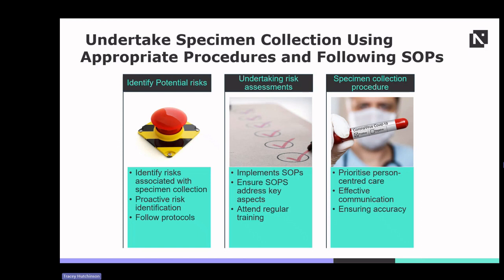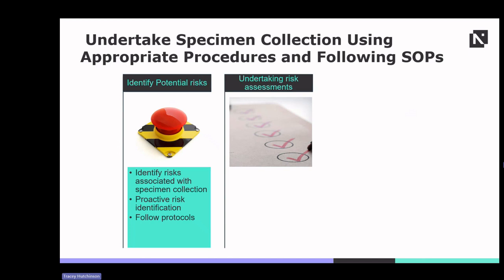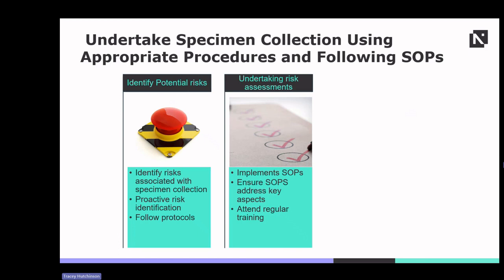When integrating risk assessment measures, first identify potential risks associated with specimen collections such as contamination, needle stick injuries and patient discomfort. Proactive risk identification through thorough assessment of the specimen collection process, equipment and environmental factors is essential. Follow protocols for reporting and addressing identified risks promptly to minimise adverse outcomes. Implement standard operating procedures, or SOPs, for specimen collection that outline standardised procedures for mitigating risks. Ensure SOPs address key aspects of specimen collection including patient preparation, sample handling, infection control measures and documentation requirements. Provide regular training and updates on SOPs to healthcare staff to ensure adherence and compliance with best practice.